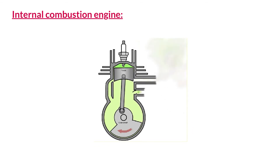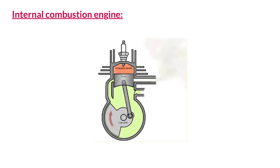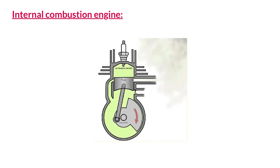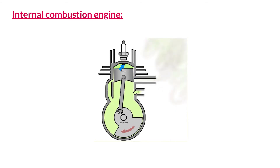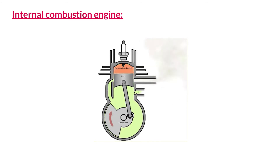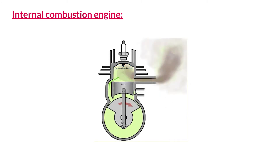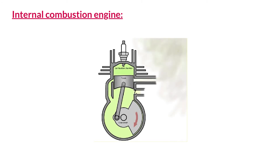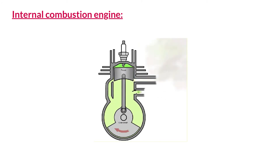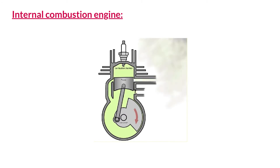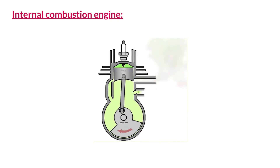Pressure-volume work is very important. The internal combustion engine in automobiles is powered by pressure-volume work. Inside the cylinder of an internal combustion engine, fuel particles react with air in an exothermic reaction. The heat released expands the gases inside the cylinder, pushing the piston outward. This up and down motion of the piston is converted into the rotatory motion of the wheel, which moves the car in the forward direction.